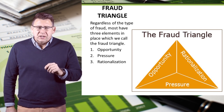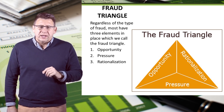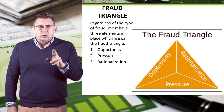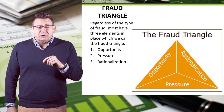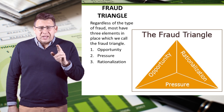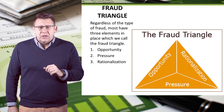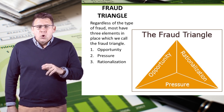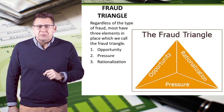Regardless of the type of fraud, most have three elements in place, which we call the fraud triangle. Opportunity: does a person or group of people have access to commit fraud? Pressure: are there pressures, either personal financial pressures or market pressures, that cause people to act desperately? And rationalization: does a person or group rationalize that what they're doing is okay? Where these three items are present, fraud is more likely to be committed.